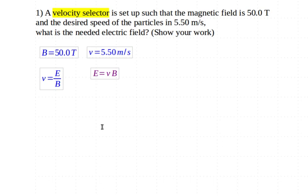So at this point, we can just sort of plug our values in. I've got 5.5 meters per second and 50.0 Tesla.